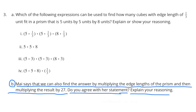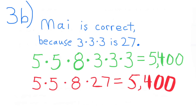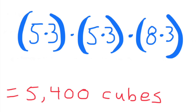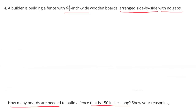Problem 3b: Mai says that we can also find the answer by multiplying the edge lengths of the prism and then multiplying the result by 27. Do you agree? I agree. Mai is correct because 3 × 3 × 3 equals 27. So 5 × 5 × 8 × 27 equals 5,400. Remember, when multiplying, the order doesn't matter — we could do 5 × 3 × 5 × 3 × 8 × 3 and still get 5,400.